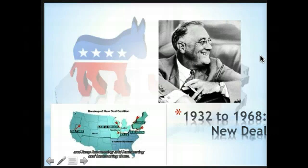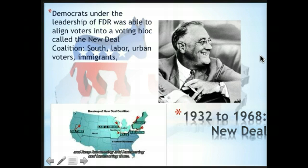From 1932 to 1968, you have the dominance of the New Deal coalition, or the New Deal Democrats. Under the leadership of FDR, Democrats aligned voters into a voting bloc called the New Deal coalition. These were people who liked FDR's promise to give poor people government jobs, give old people government assistance, and give families with children welfare support. With those promises, he attracted a coalition from the south with high concentrations of minority populations affected by the Great Depression, as well as laborers, urban voters, and immigrants.